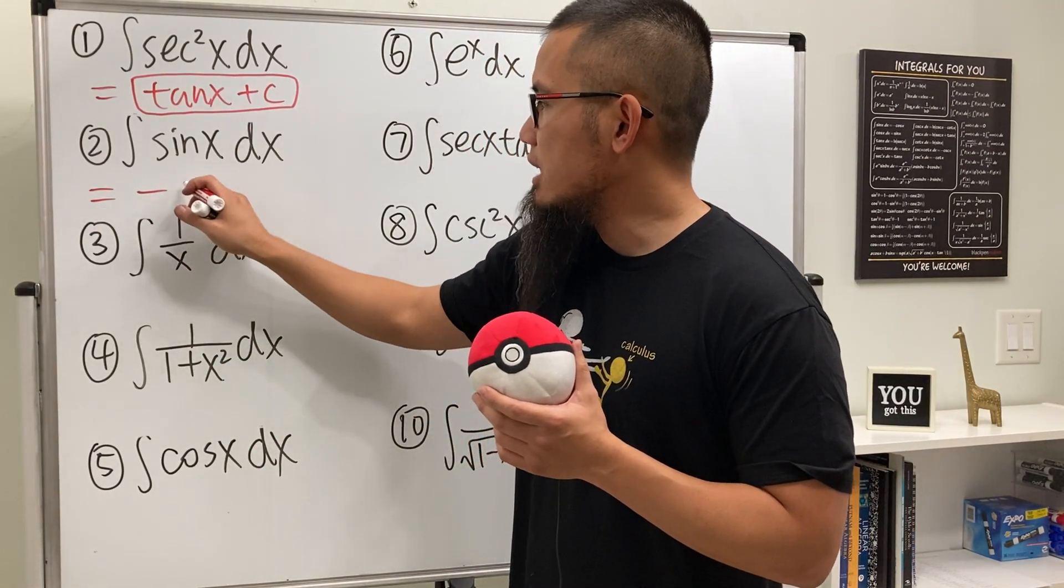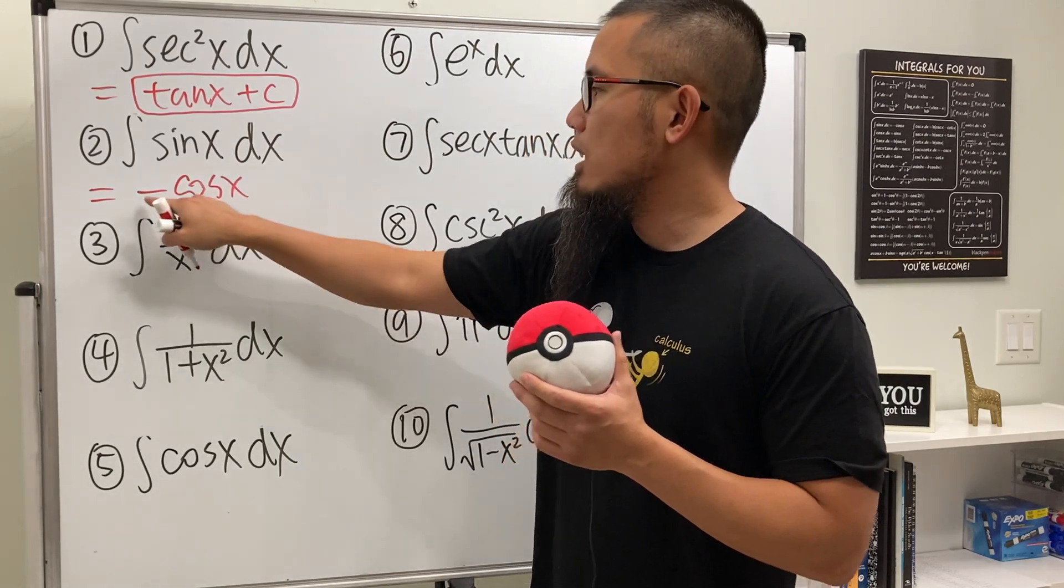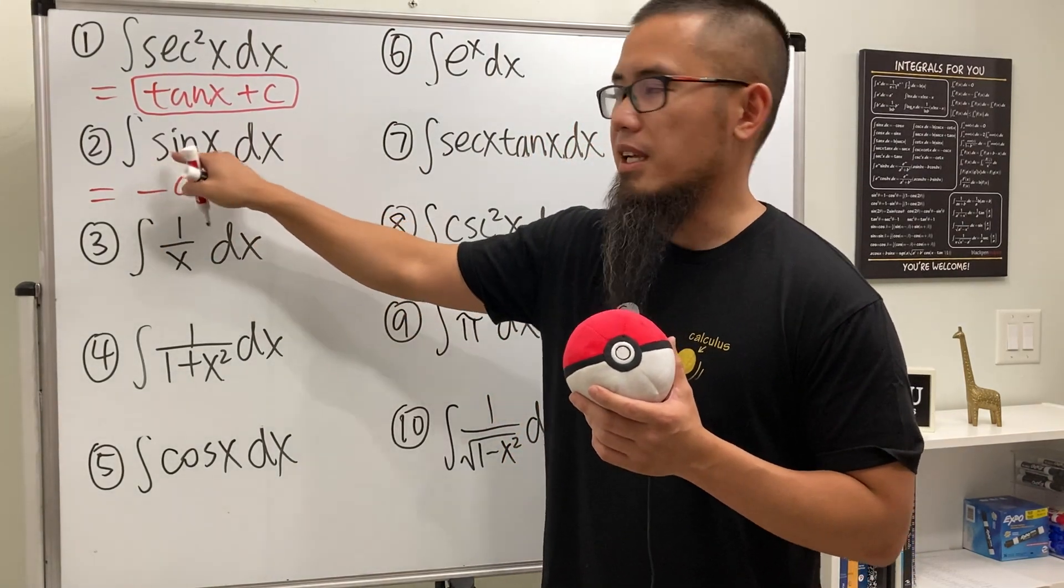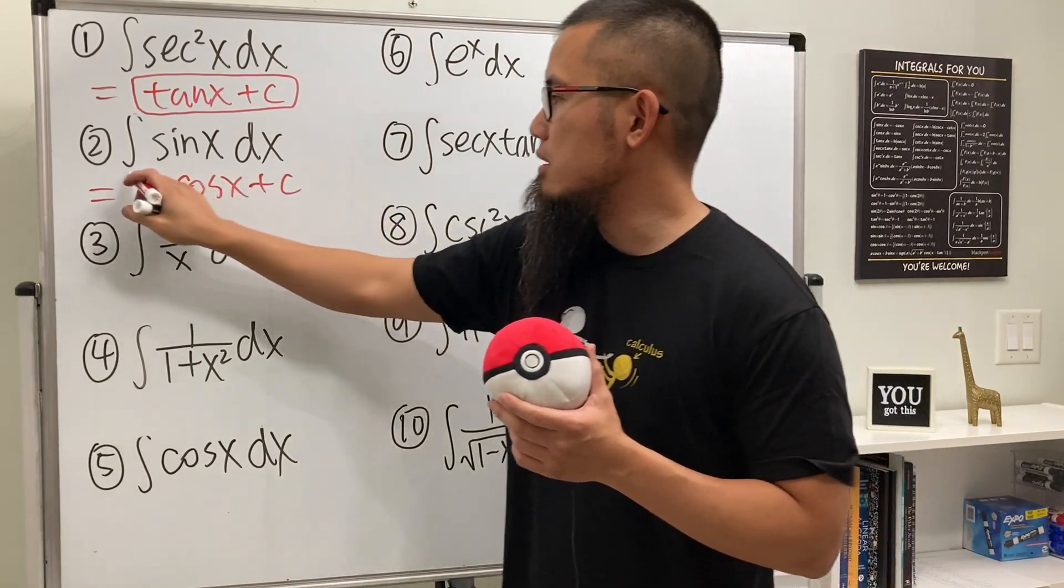Negative cosine x. When we differentiate this we will get positive sine x. And don't forget the plus C, so that would be it.